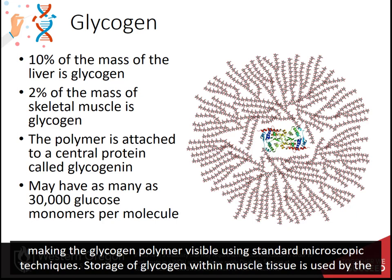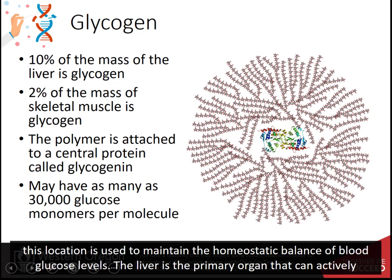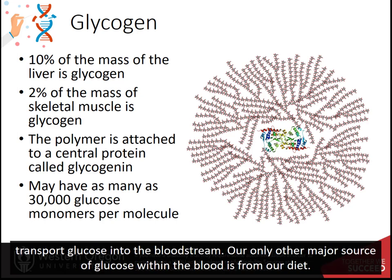Storage of glycogen within muscle tissue is used by the muscle cells as a source of energy to fuel muscle contraction. In the liver, the purpose of glycogen storage is different. Glycogen stored at this location is used to maintain the homeostatic balance of blood glucose levels. The liver is the primary organ that can actively transport glucose into the bloodstream. Our only other major source of glucose within the blood is from our diet.